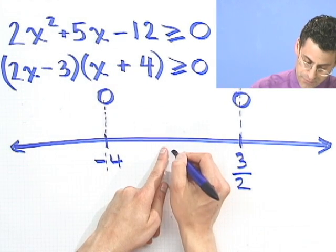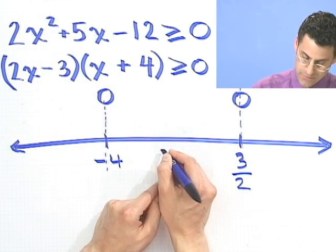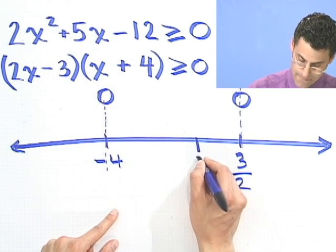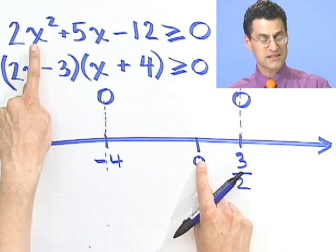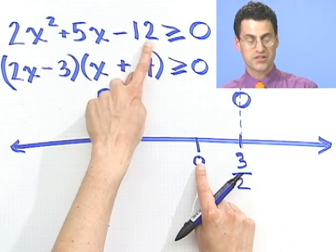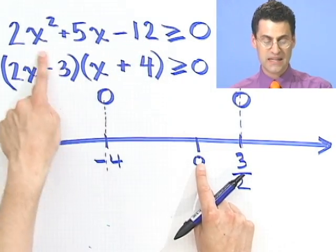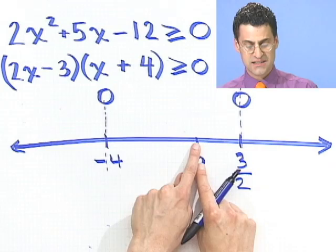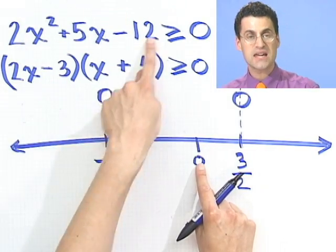So suppose I pick 0. If I plug in 0, which would be maybe like right over here, if I plug in 0 for x, what would I see? 0 plus 0 minus 12. So this thing here would equal negative 12. So that means at 0, this thing is negative.